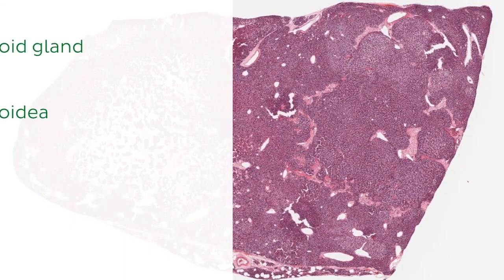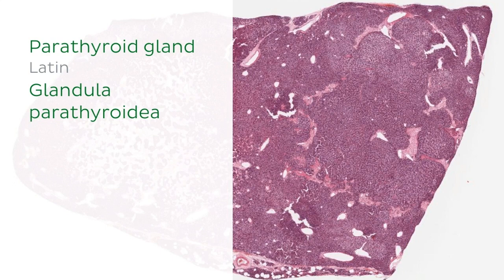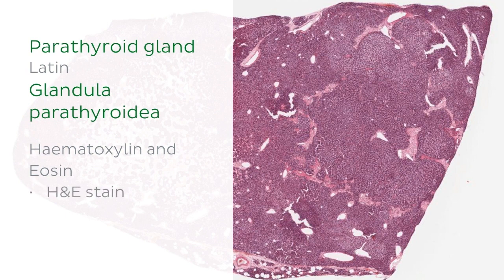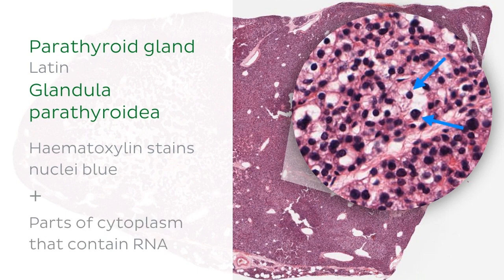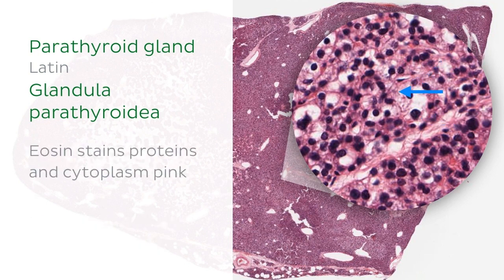This is a histological image of the parathyroid gland, and this is the image we'll be focusing on throughout the tutorial. The section has been prepared with hematoxylin and eosin stain, often called the H&E stain. H&E is the most commonly used histological stain due to its simplicity and ability to clearly define the basic morphology of a tissue by staining nuclei and cytoplasm in different colours. The hematoxylin component stains the nuclei blue, in addition to parts of the cytoplasm that contain RNA. The sample is then counterstained with eosin, which stains proteins and cytoplasm varying shades of pink.